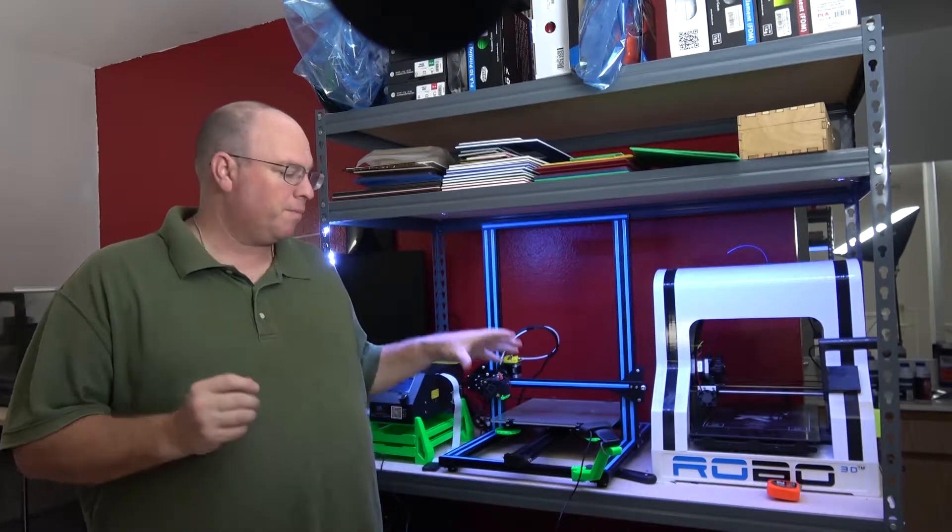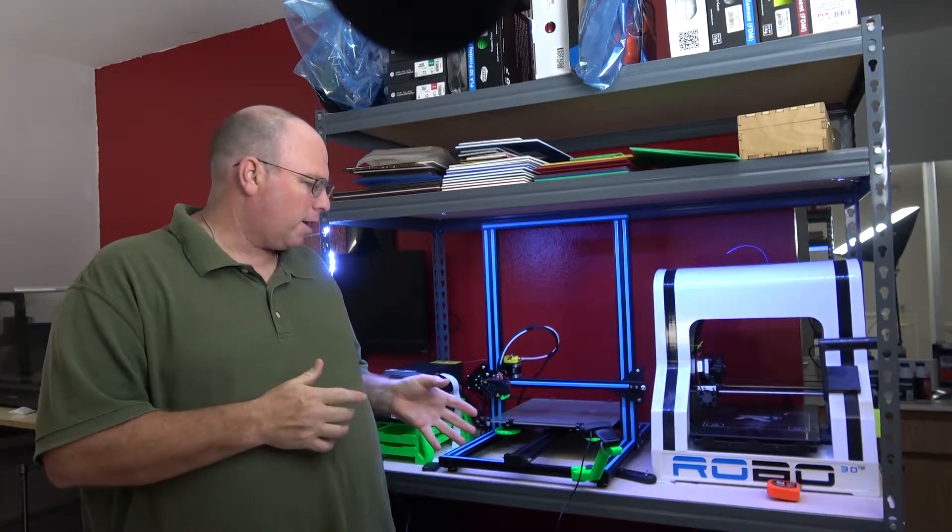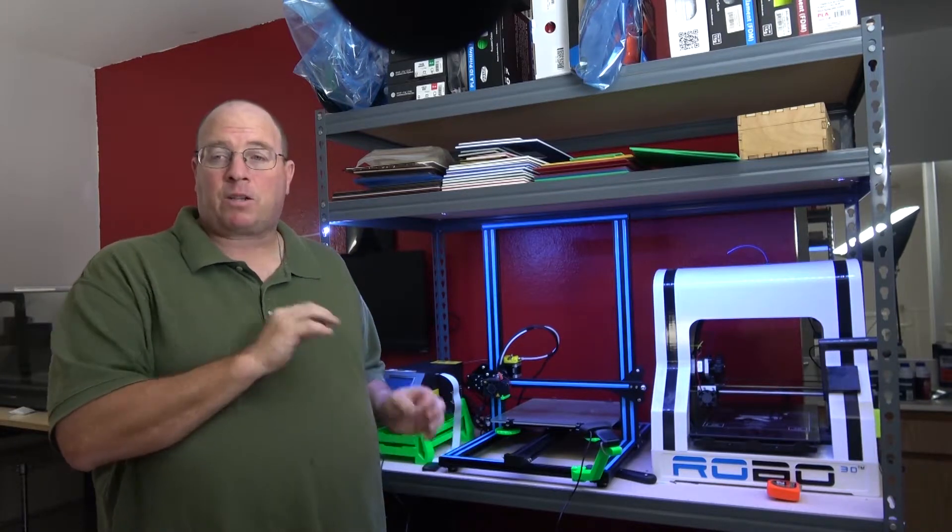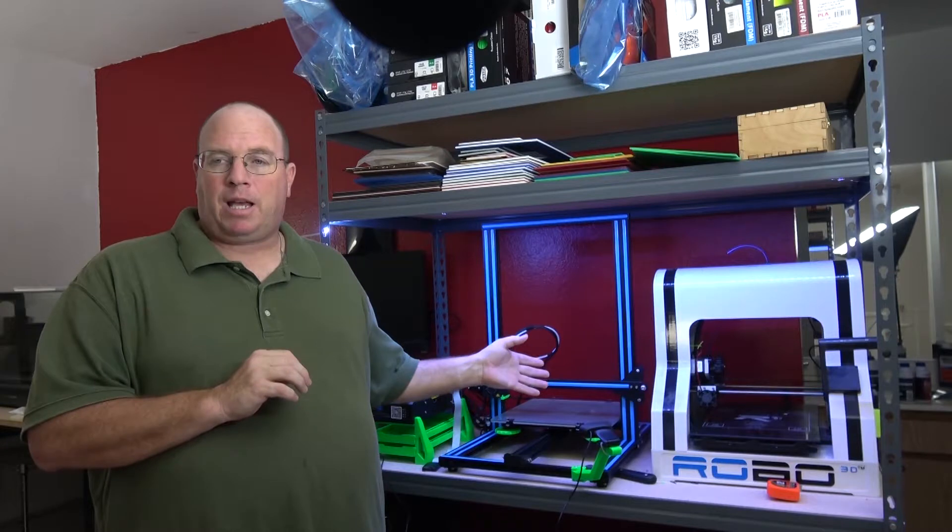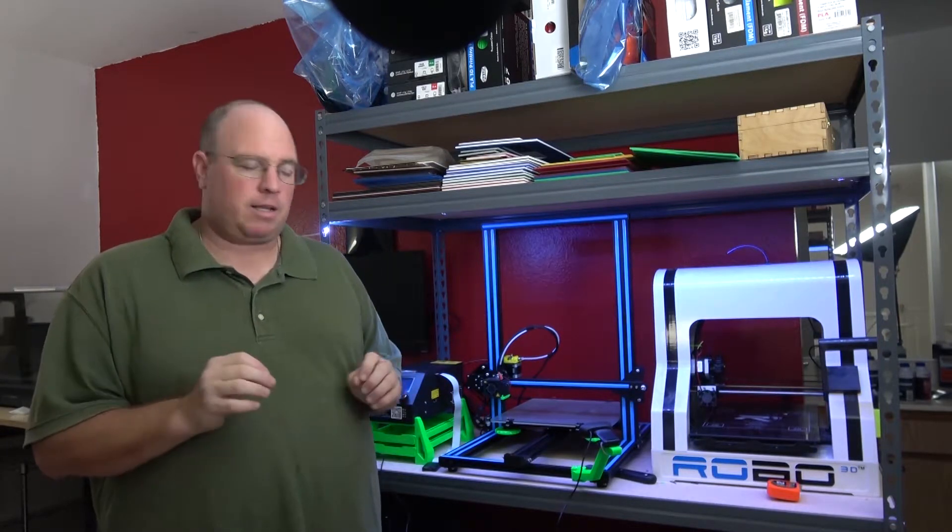Alright, so those are the mods we made to the printer so far. Like I said, there will be another one with Octoprint coming in and another episode where we put some new fans in it to quiet it down some. We might be adding a second Z access rod for taller prints but we haven't decided on that yet.